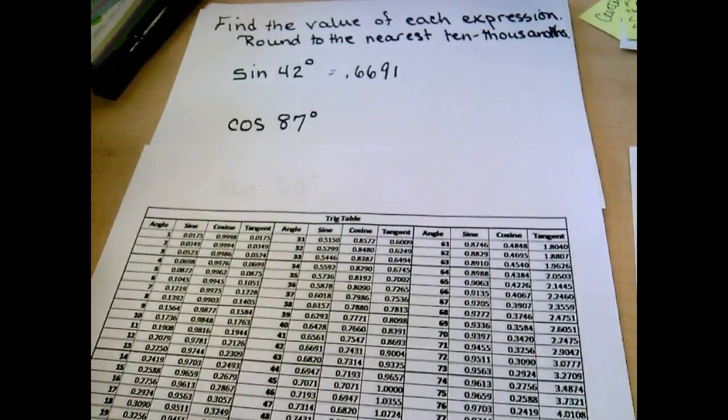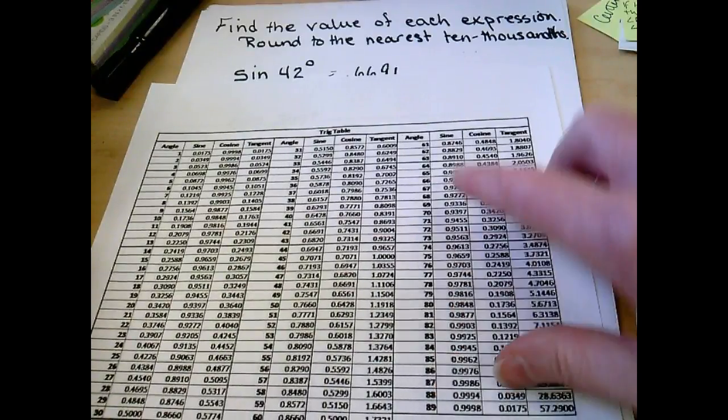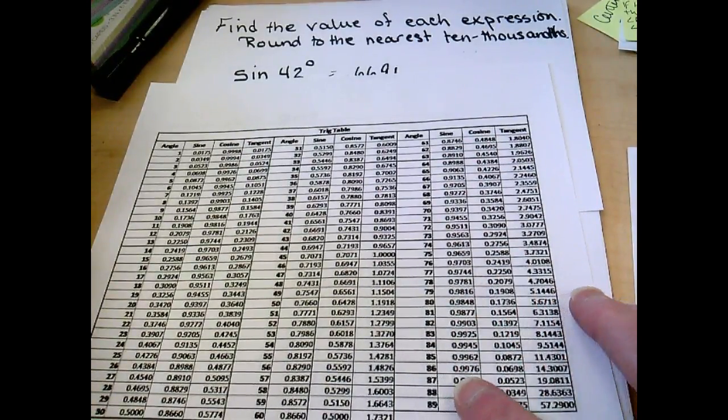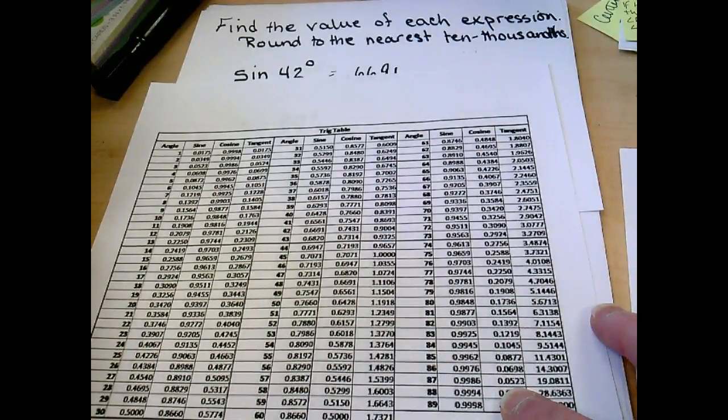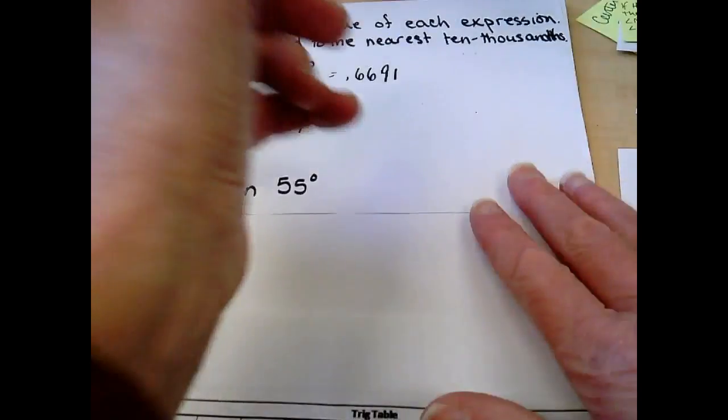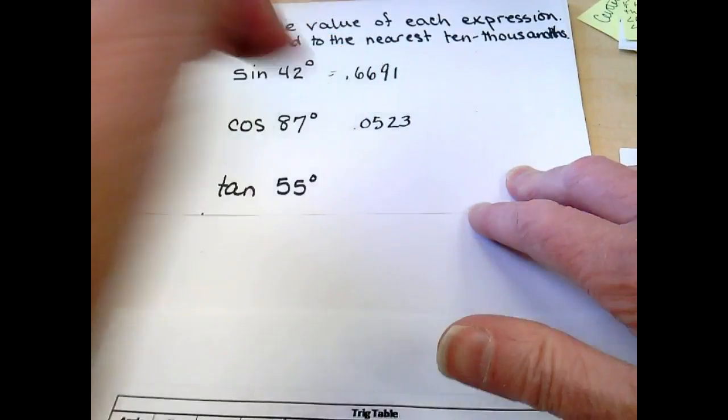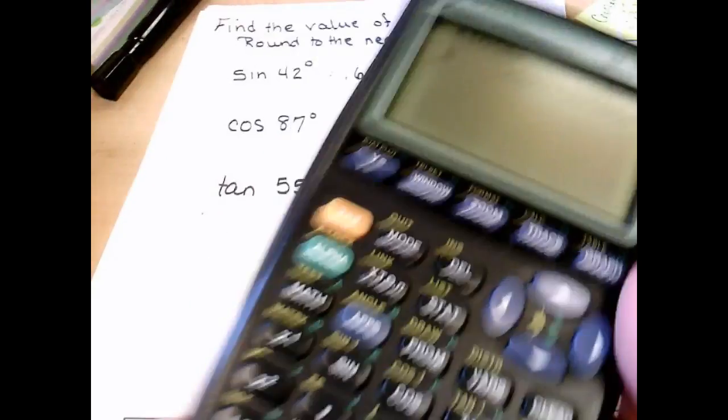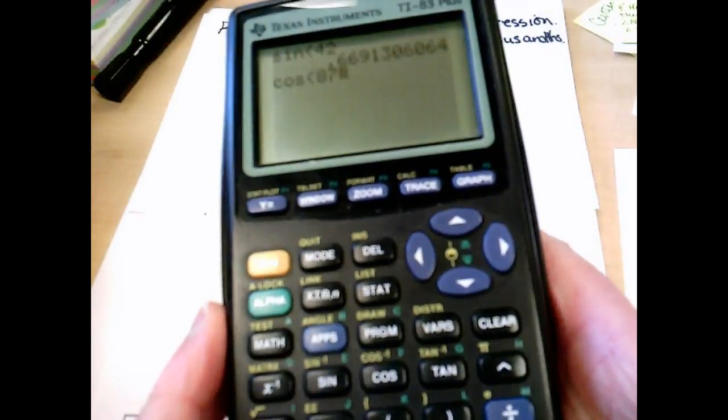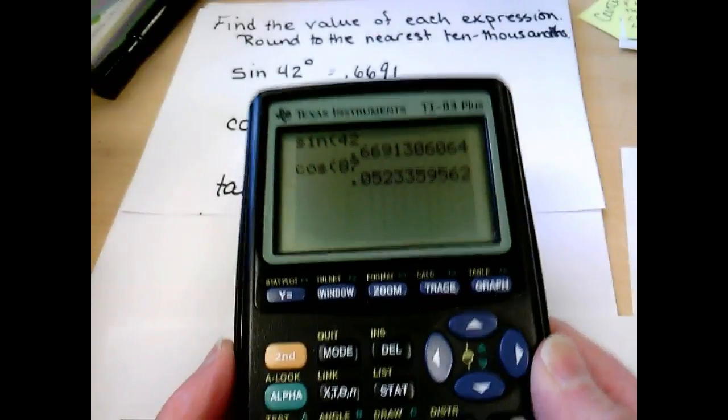If we want cosine of 87, I can go down to 87, go across to cosine, 0.0523. Or again, with a calculator, cosine 87, enter, 0.0523.